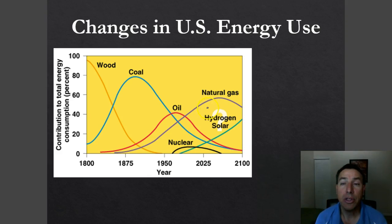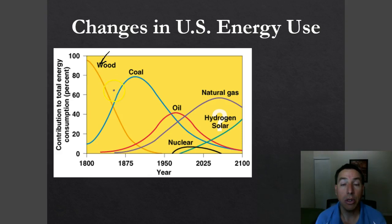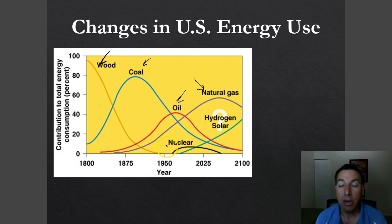How has energy use in the United States changed historically? Obviously in the beginning, wood was our main source — we had lots of forests and didn't know about coal or oil. As the Industrial Revolution occurred, we discovered coal, which became a primary energy source. Then that dropped off once we discovered oil, and oil has also slowly started decreasing with the rise of other types of energy such as natural gas.